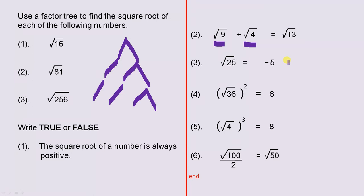Number 3, the square root of 25 is negative 5, so if you've got the answer to this one correctly, you will know what the answer to this one is.